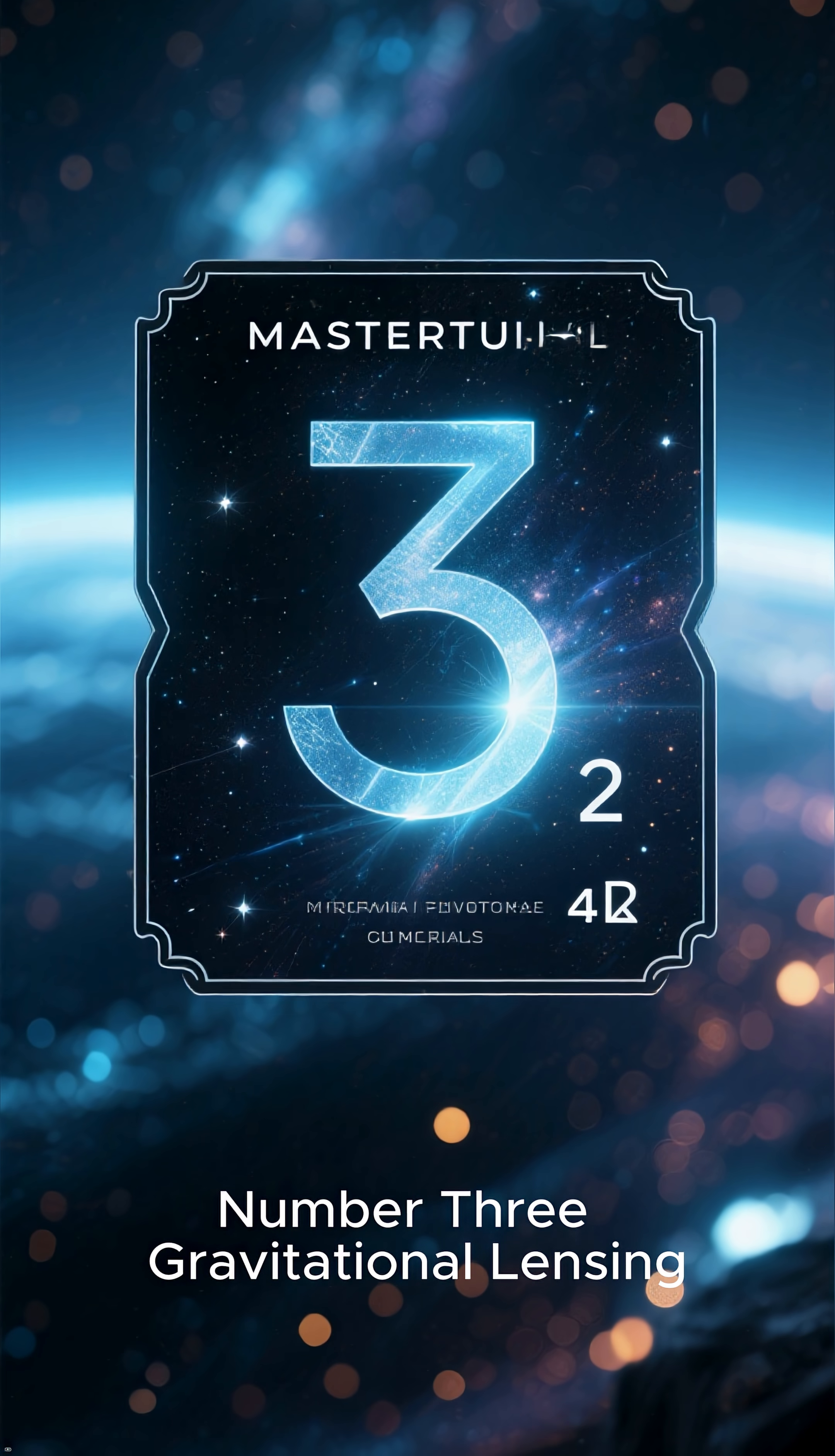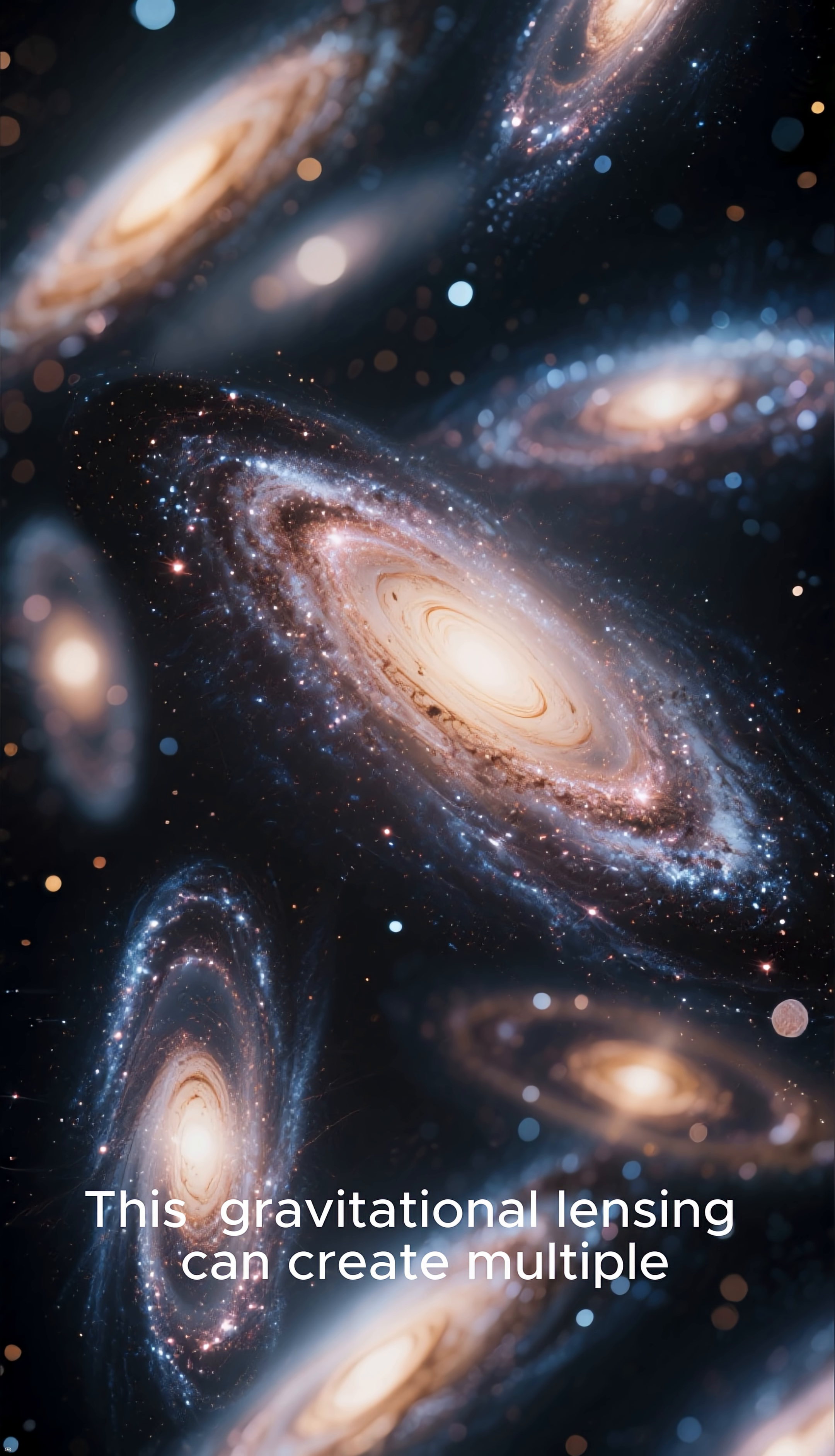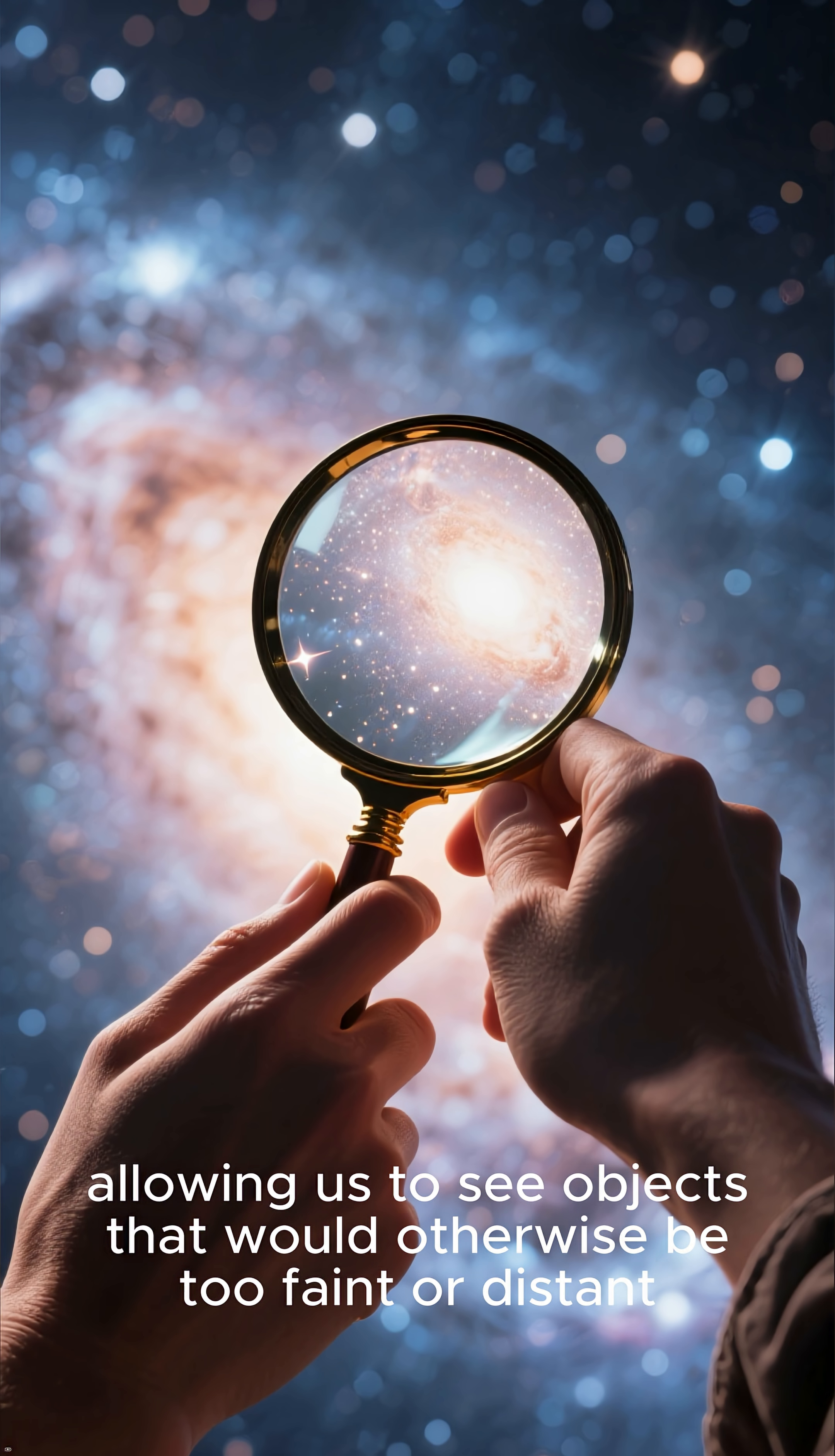Number 3. Gravitational Lensing. When light from a distant galaxy passes near a massive object, like a galaxy cluster, its path is bent, just as light is bent by a glass lens. This gravitational lensing can create multiple distorted images of the background galaxy, or even stretch it into long, luminous arcs. It acts as a cosmic magnifying glass, allowing us to see objects that would otherwise be too faint or distant.